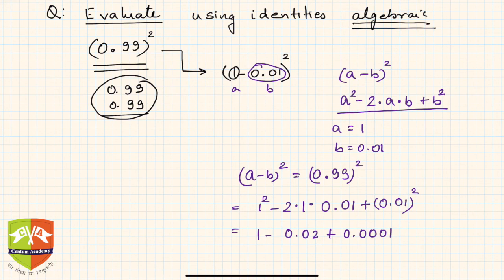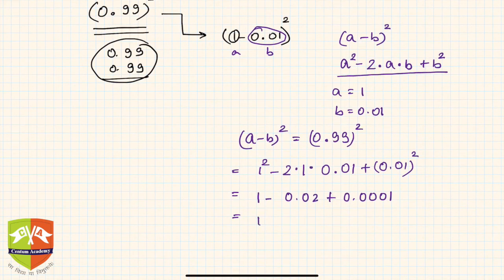If you really solve it, it is 1.0001 - 0.02, which is nothing but 0.9801. You can do this on the sidelines as well.